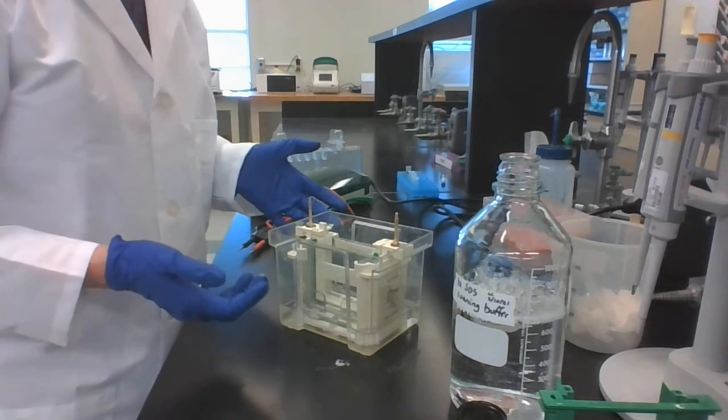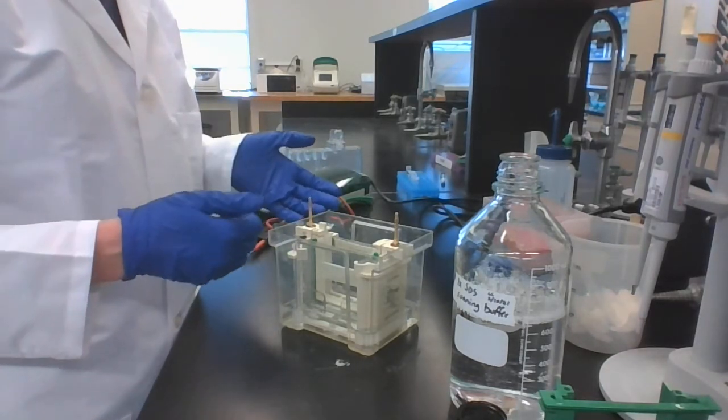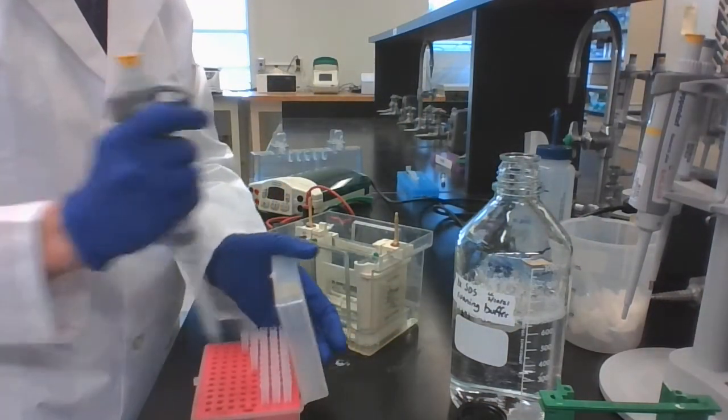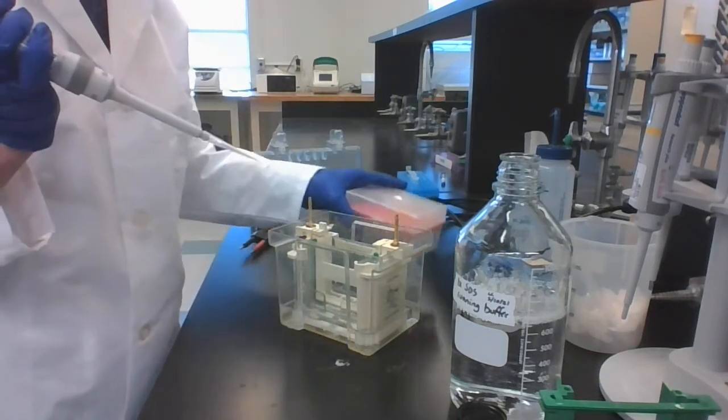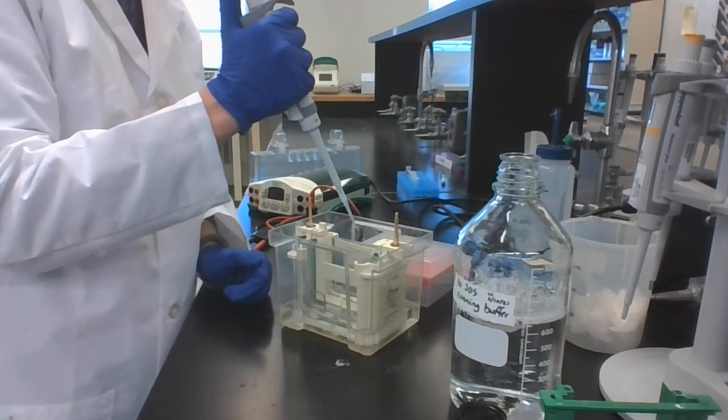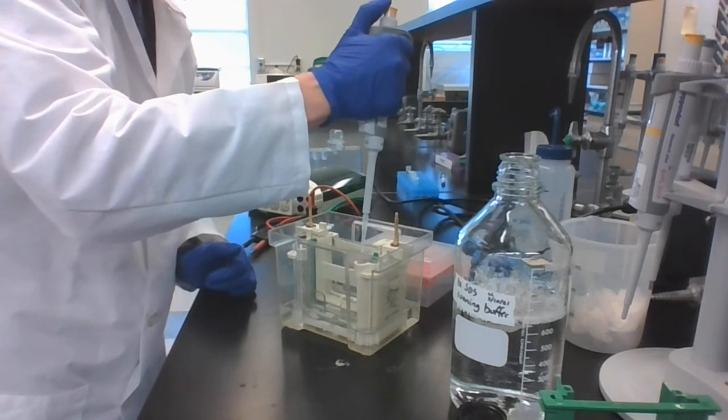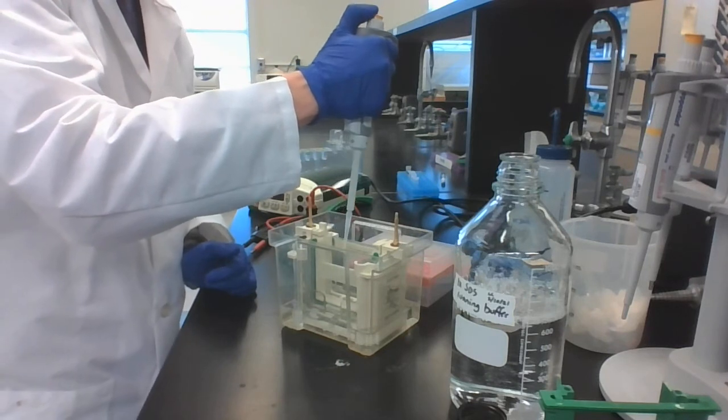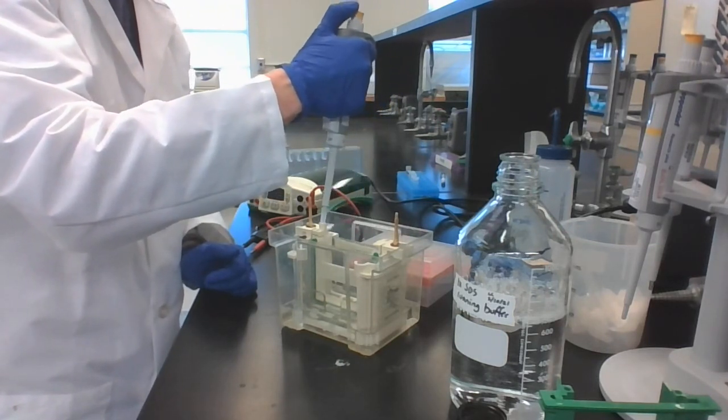Now, one thing that you can do to help your samples run really well is actually wash out the wells with pipetting. This helps you get rid of any unpolymerized stuff that might be hanging out in the wells. I'm going to get about 100 microliters. I'm going to take some from the middle of where the buffer is, and I'm going to basically just pipette up and down all the way across here. If you want to get really careful with it, you can aim your pipetter into each well. But it's usually okay just to pipette up and down a bunch more times.